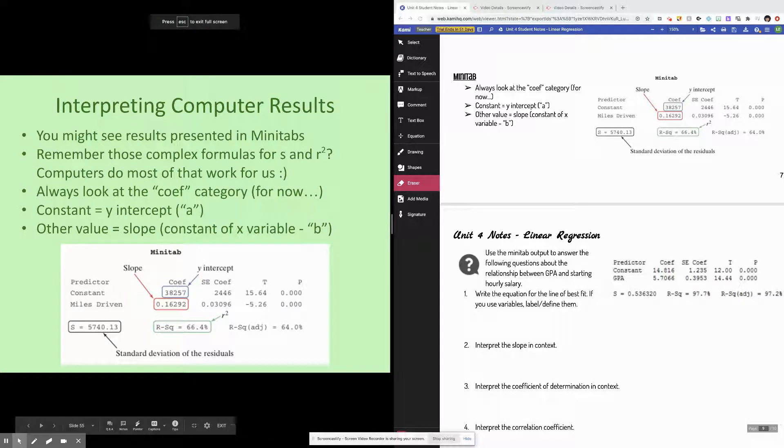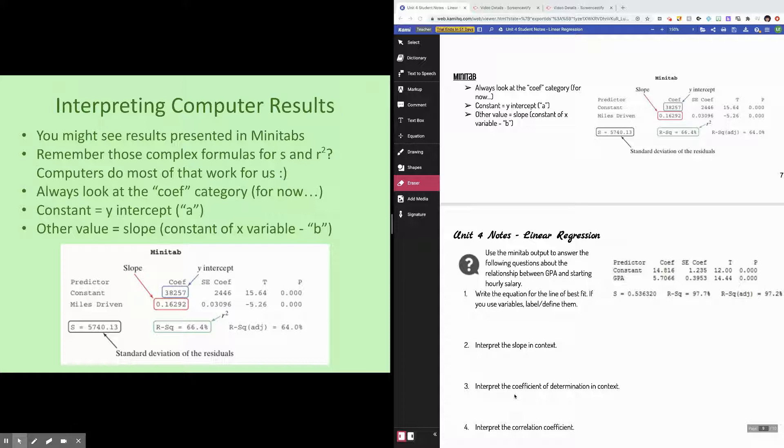Hi everybody! In this video I'm going to talk to you about computer results for linear regression, talk to you a little bit about prediction, and as well as how to calculate slope and y-intercept if you are given a mean and standard deviation. That last bit is something that's fairly uncommon, doesn't show up very often, but I wanted to at least expose you to it so you've seen it before.